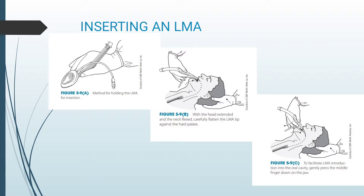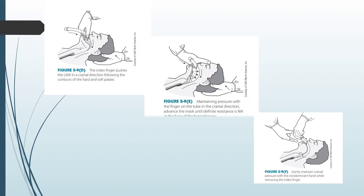The following images show insertion of an LMA. The first image shows the method of holding the LMA for insertion. Moving to figure B: with the head extended and the neck flexed, carefully flatten the LMA tip against the hard palate. To facilitate introduction into the oral cavity, gently press the middle finger down on the jaw. The index finger pushes the LMA in a cranial direction following the contours of the hard and the soft palate. Figure E shows using both hands, maintaining pressure with the finger on the tube in the cranial direction. Advance the mask until a definite resistance is felt, then gently maintain cranial pressure using the non-dominant hand while removing the index finger.